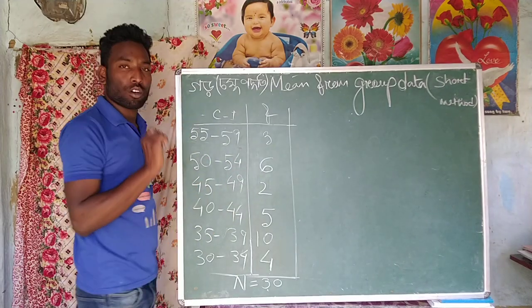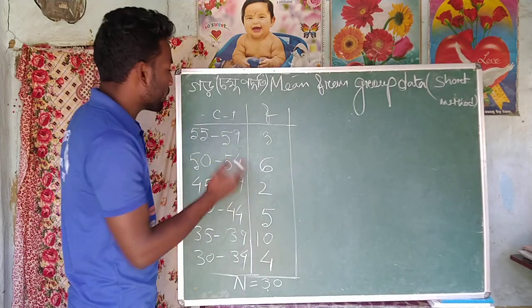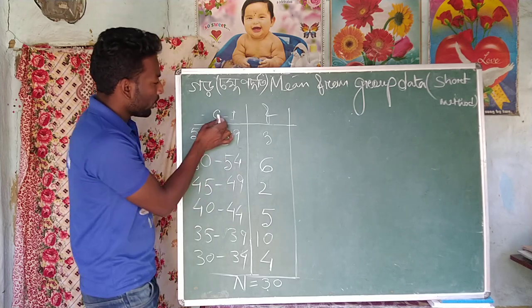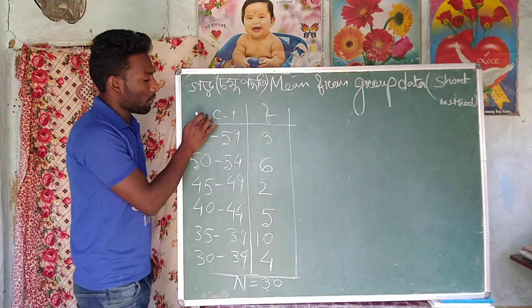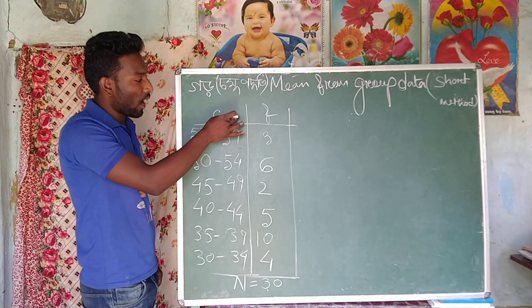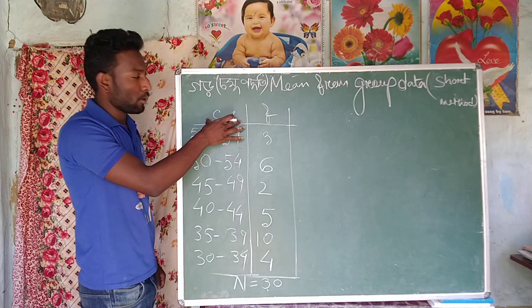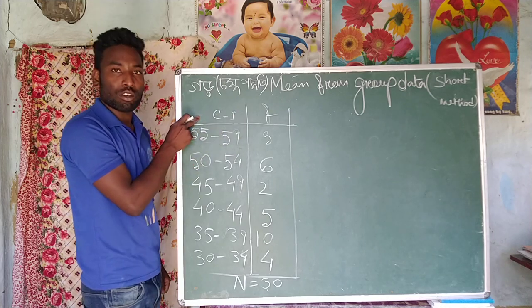So let's start. So this is rated C.I. — the class interval — always used to indicate the frequency corresponding to n.